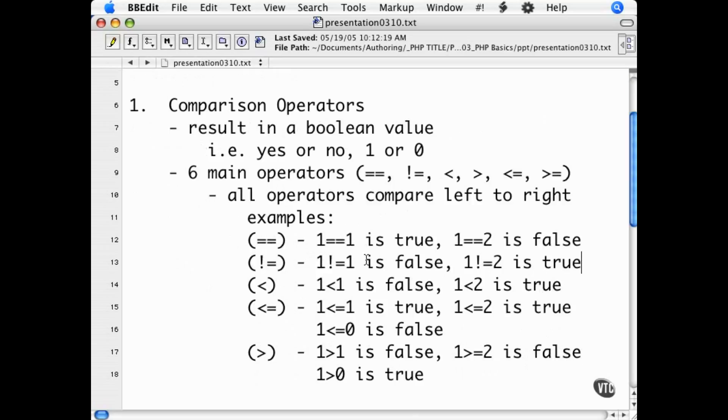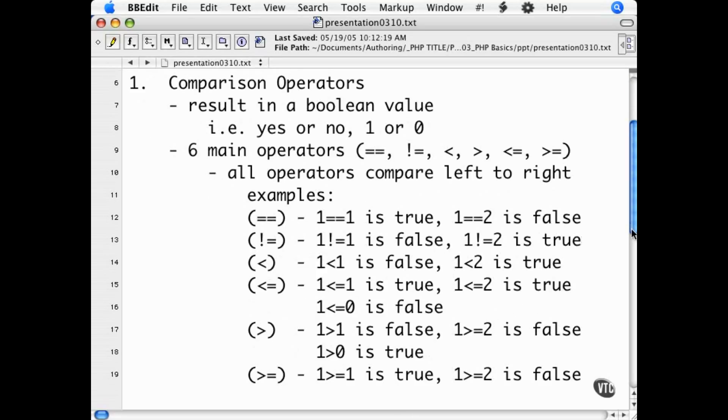First, are comparison operators. Comparison operators result in a Boolean value. If you remember back to the movie on types, a Boolean value is either true or false.